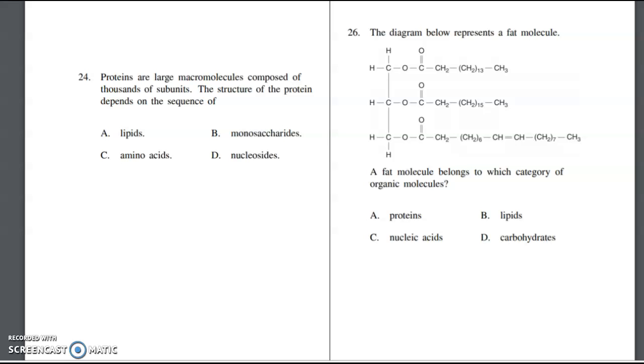We're going to continue with part three of the biology EOC review. Number 24 says proteins are large macromolecules composed of thousands of subunits. The structure of the protein depends on the sequence of those subunits. Those are amino acids. Amino acids are the building blocks of proteins. Remember, we take our mRNA codons to the codon table to see which amino acid is going to be picked up and taken to the ribosome to be assembled. They're held together by peptide bonds to form a long polypeptide and their protein.